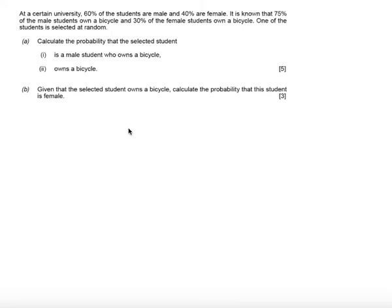In this question we're told at a certain university 60% of the students are male and 40% are female. It is known that 75% of the male students own a bicycle and 30% of the female students own a bicycle. One of the students is selected at random.